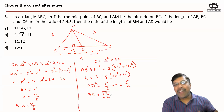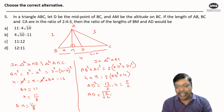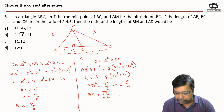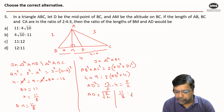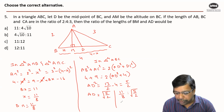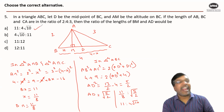Once we have BM = 11/8 and AD = √(5/2), it's only about finding the ratio. The ratio BM : AD = (11/8) : √(5/2). Multiplying through by 8, we get 11 : 4√10. Hence, answer option A. This question also takes a bit of time, but all you need are the fundamental concepts of geometry involving altitudes and medians.